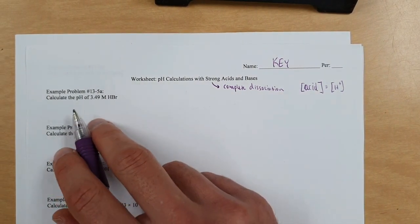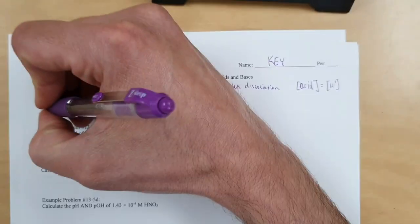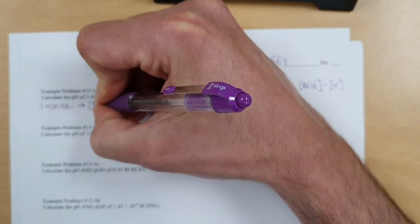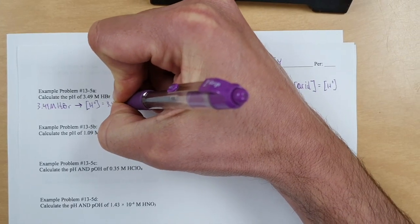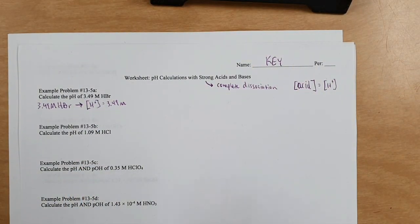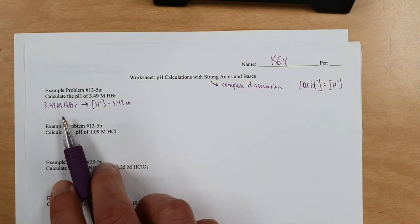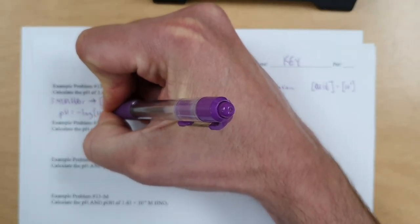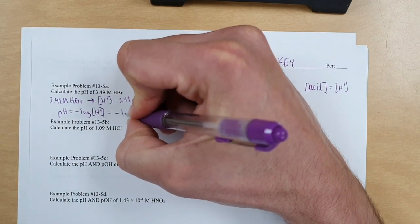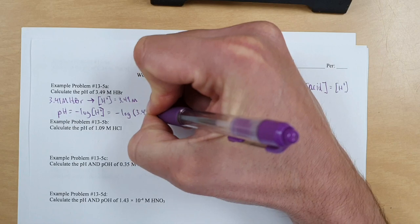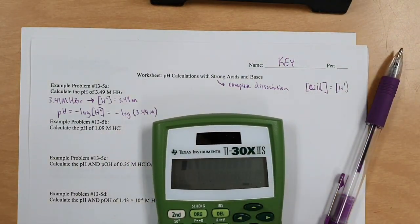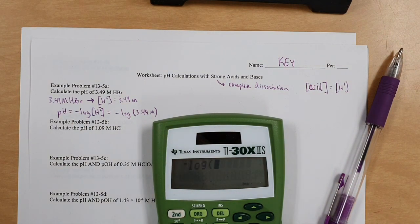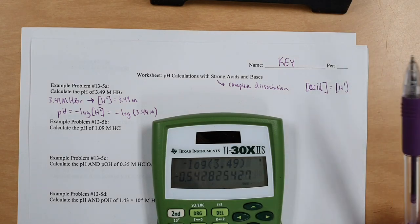If we have the pH of 3.49 molar HBr, we assume 3.49 molar HBr implies the concentration of hydrogen ion is equal to 3.49 moles per liter, or 3.49 molar. Because of that, we use pH equals negative log of the hydrogen ion concentration, which is therefore negative log of 3.49 moles per liter. Technically, it doesn't matter if you include the M or not because pH doesn't have units.